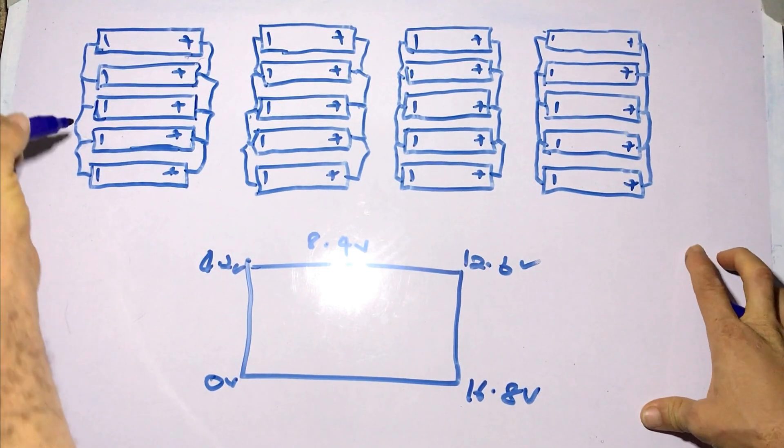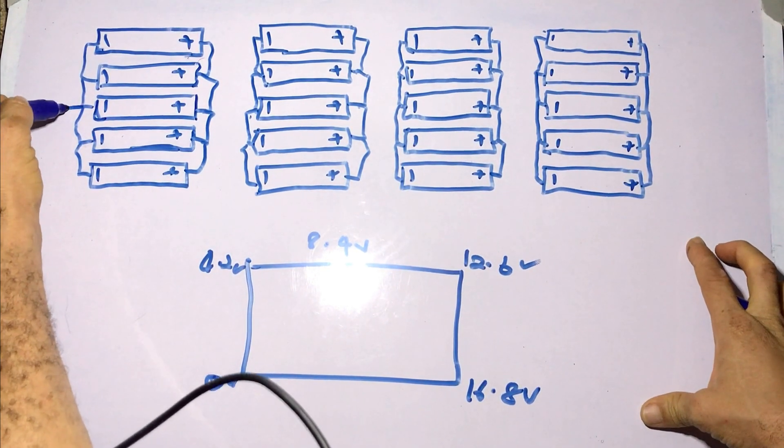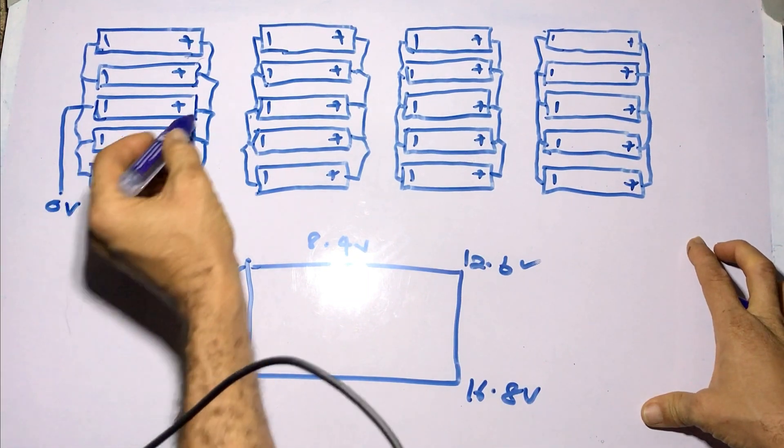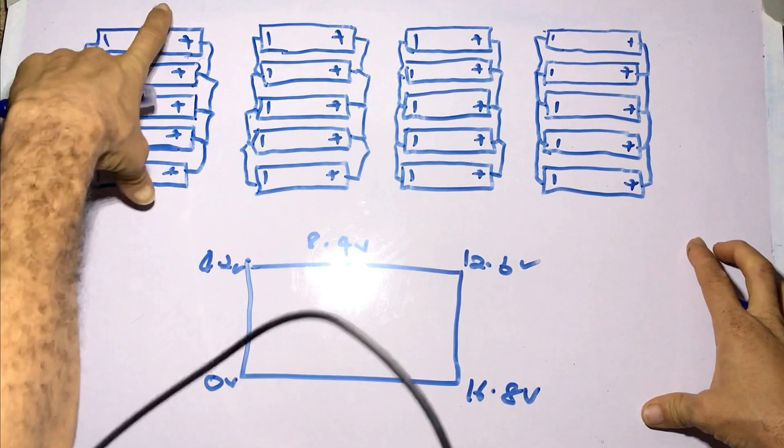And on a battery bank, you also have five connections. This is the battery negative connection, labeled zero volt. And this is our first cell pack.